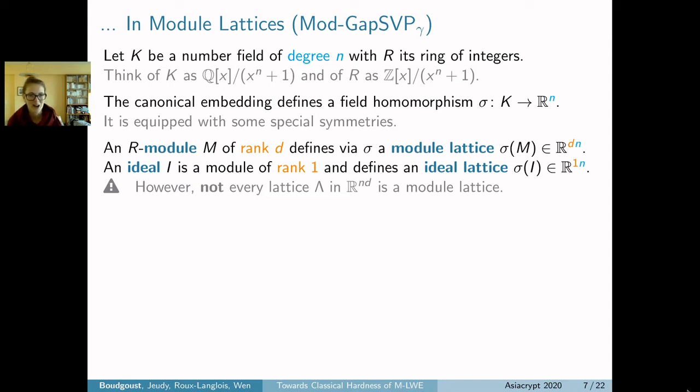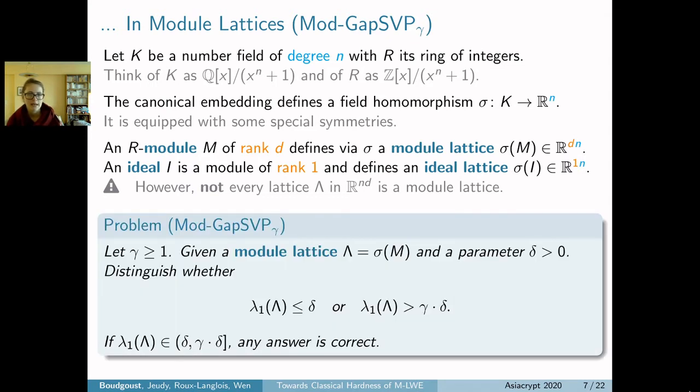If I lost you a bit, what I really would like you to take away is that not every lattice in ℝ^{dn} is a module lattice—those are somehow special lattices. Then we can define the approximate gap shortest vector problem over module lattices by simply replacing the general lattice by module lattice in the definition. So again, the task is to decide whether the minimum is smaller than δ or larger than γ·δ for an approximation factor. That was the first lattice problem; now the second.